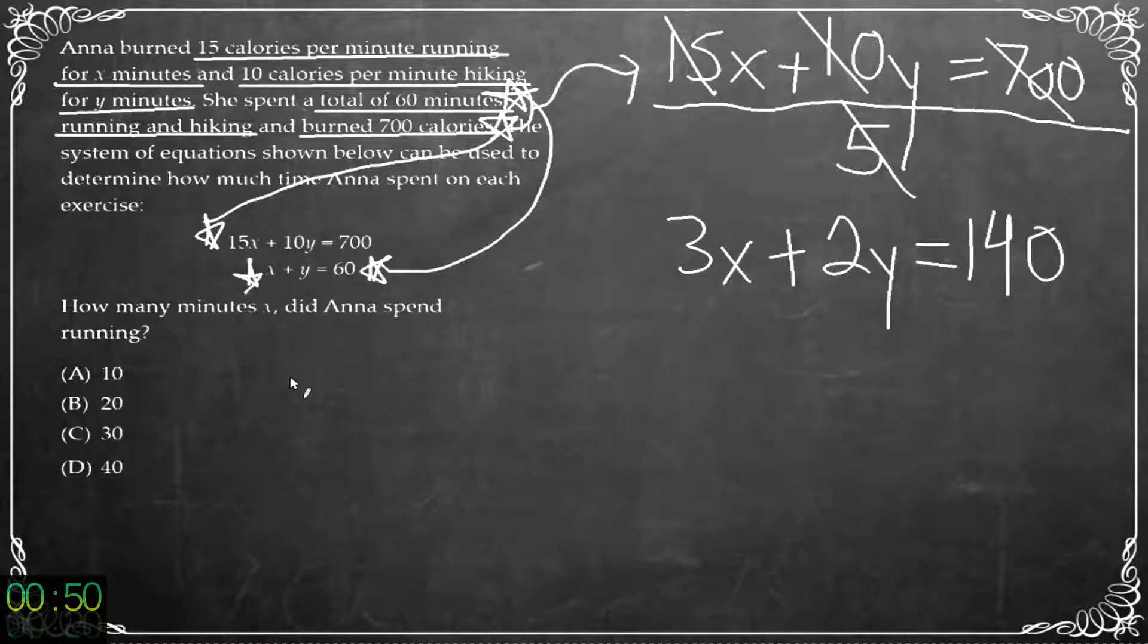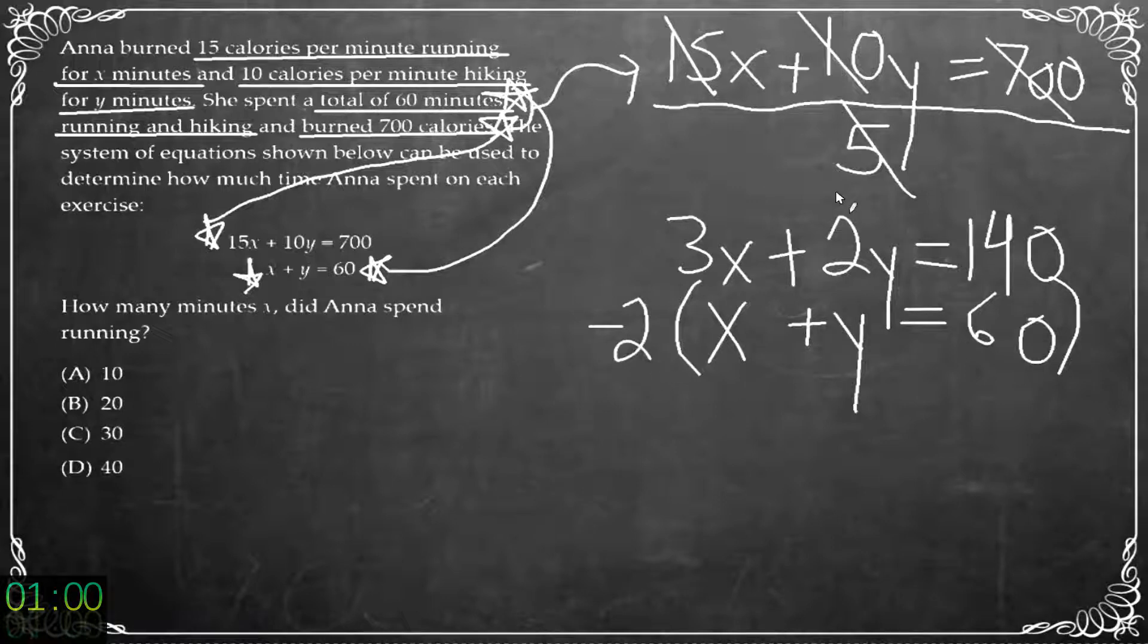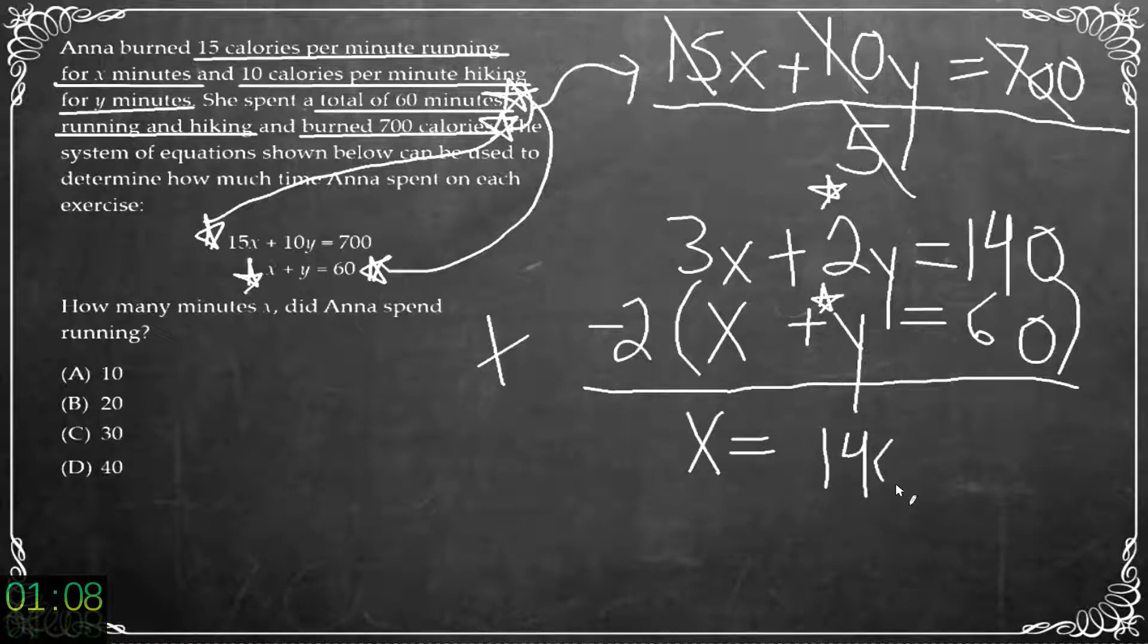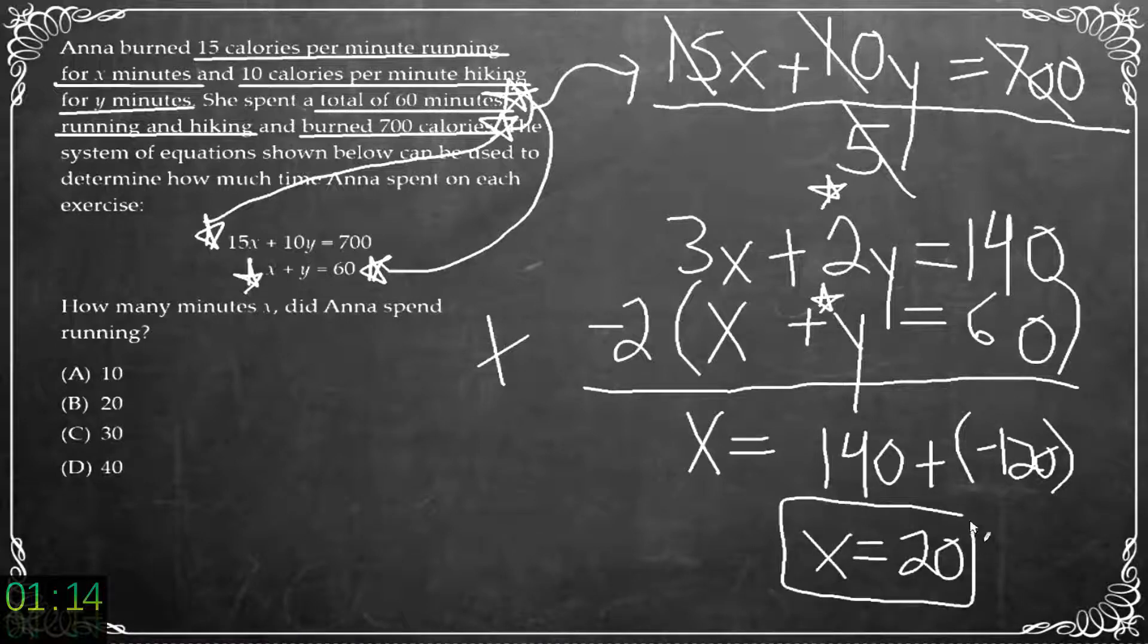Now that second equation in my system of equations X plus Y is equal to 60. It makes me think that the addition subtraction method is going to be the best here as long as I multiply that second equation by a negative 2 to add them together and cancel out my Y's. We are after all trying to find X so now we know that X is equal to 140 plus negative 120 which is of course 20 minutes. B.